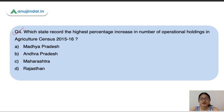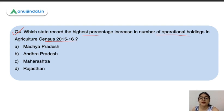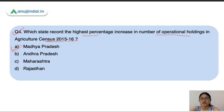Question 4: Which state has the highest percentage increase in the number of Operational Holdings in Agriculture Census 2015-16 compared to the 2011 census? The correct answer is Madhya Pradesh, with the highest percentage increase, followed by Andhra Pradesh, Maharashtra, and Rajasthan. So while the highest operated area is in Rajasthan, the highest percentage increase in holdings is in Madhya Pradesh.